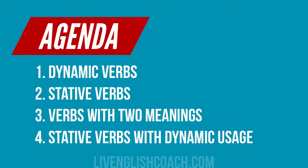We'll also look at stative verbs. Some verbs in English express more states rather than actions. Compared to dynamic verbs, they are slightly weaker, but they are still verbs. Then we'll move on to verbs that can have two meanings — certain verbs that can be both dynamic and stative depending on the context. And finally, we'll look at stative verbs that can be used with a dynamic shade in meaning. So let's get started.